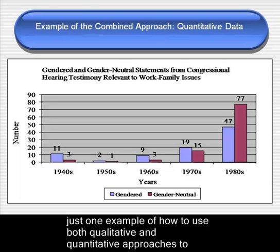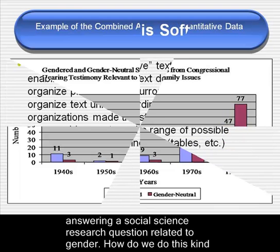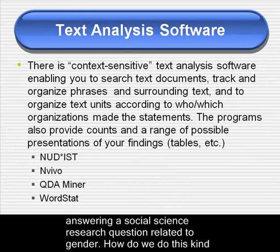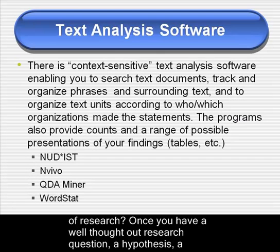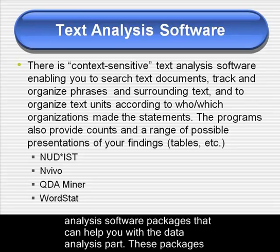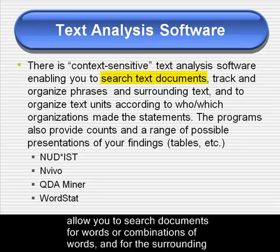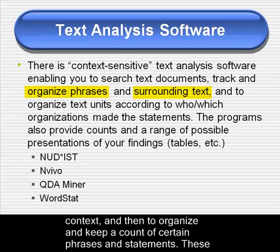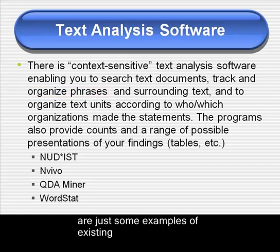This is just one example of how to use both qualitative and quantitative approaches to answering a social science research question related to gender. Once you have a well-thought-out research question, a hypothesis, a research design, and a potential source of data, there are numerous context-sensitive text analysis software packages that can help you with the data analysis part. These packages allow you to search documents for words or combinations of words and for the surrounding context, and then to organize and keep account of certain phrases and statements. These are just some examples of existing programs.